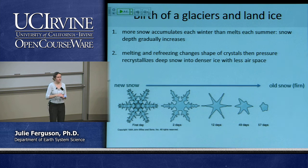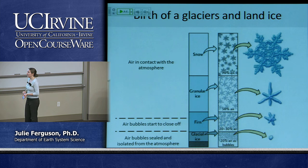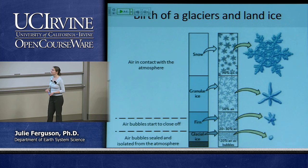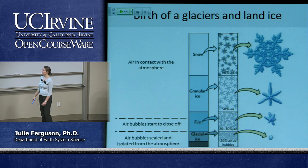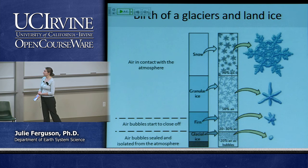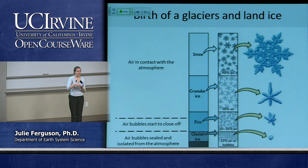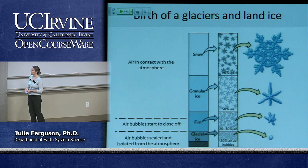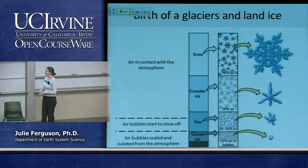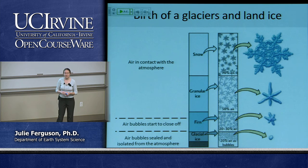If we dug a hole down through snow and ice, here's what we'd see. At the top: snow, roughly 90% air. A bit further down, pressure and re-melting produce granular ice with about 50% air. Then we get into firn — F-I-R-N — where the air pockets between ice particles start to seal off and disconnect from the atmosphere, leaving about 20–30% air. Below that firn layer we have glacial ice, starting at around 20% air bubbles, which gets compressed further with increasing depth.